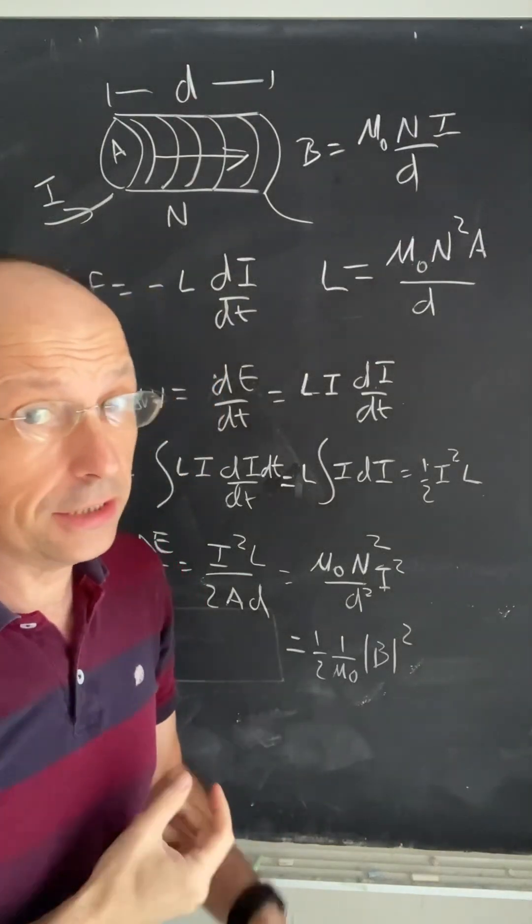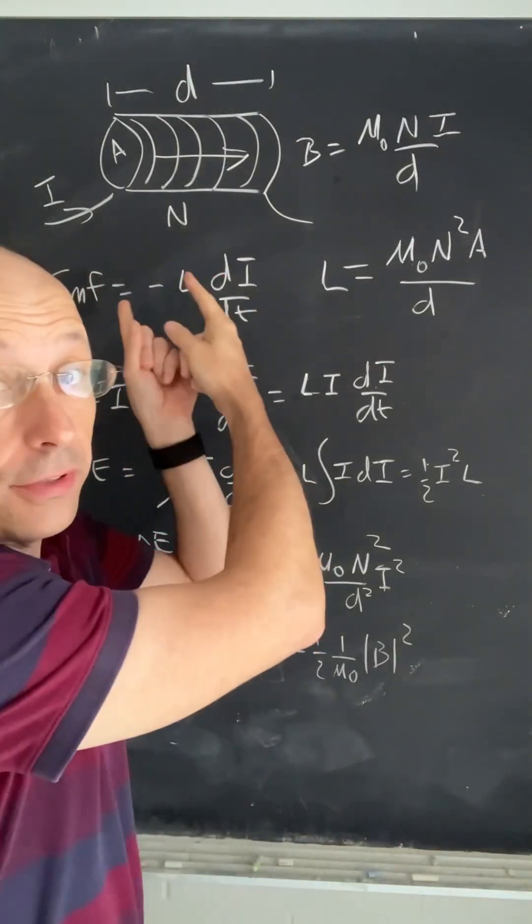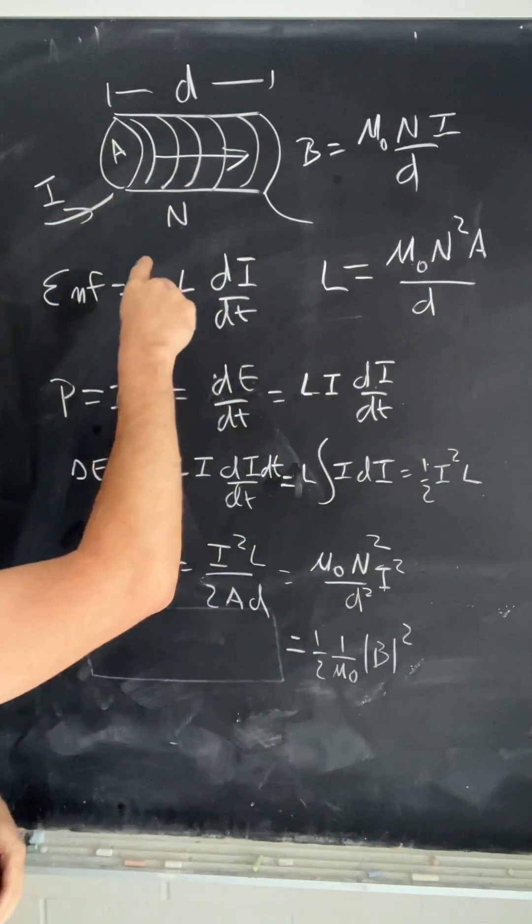How do you find the energy density stored in the magnetic field? You use an inductor. So an inductor is a coil of wire.